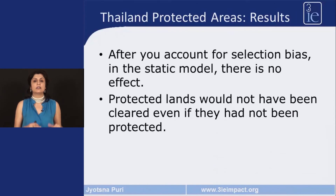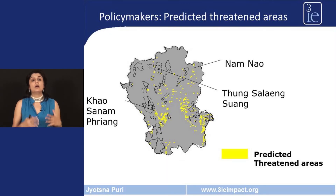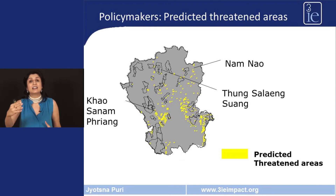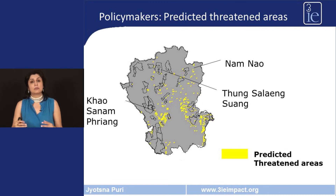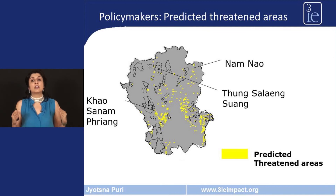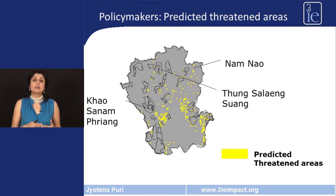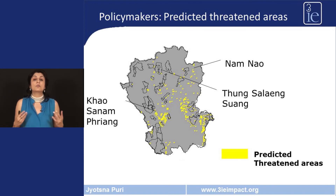We found that after accounting for selection bias, there is no effect of protected areas on land clearing — that is, protected areas would not have been cleared even if they had not been protected. We also used this study to understand the likelihood that plots of land would get cleared in subsequent years. The yellow areas on the map show a much higher than even likelihood of being cleared. We found 293 such plots — almost 300 — threatened with imminent clearing. Such predictive studies can be very important for policymakers.